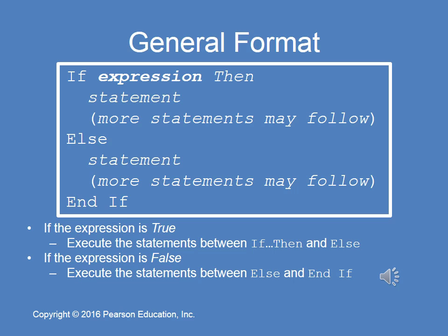Here we have the syntax for if-then-else. We have the expression. If the expression is true, execute the statements between 'if' and 'else'. If the expression evaluates to false, execute the statements after 'else' and before 'end if'. We have a true branch and a false branch — a two-way branch in this example.